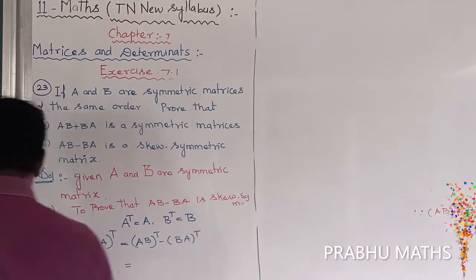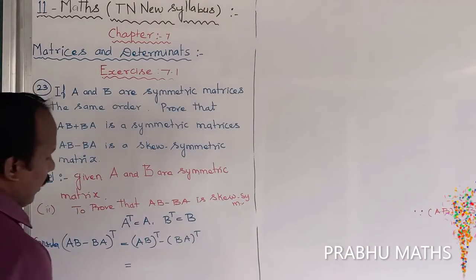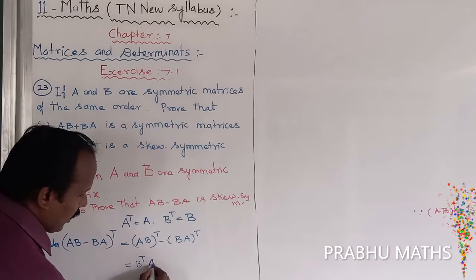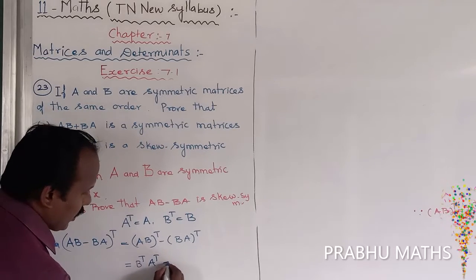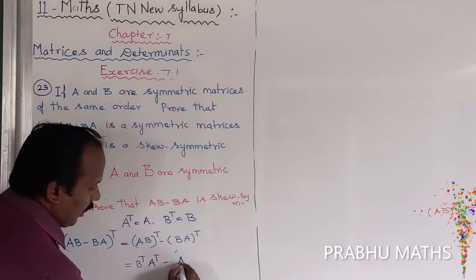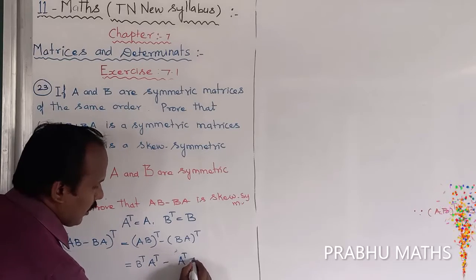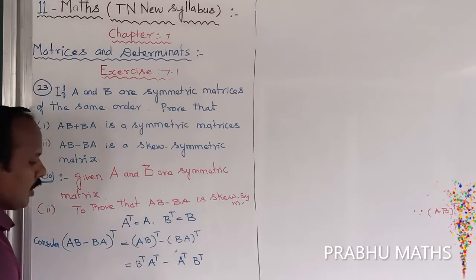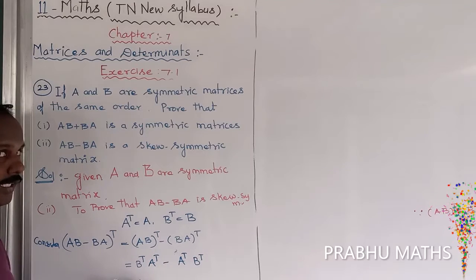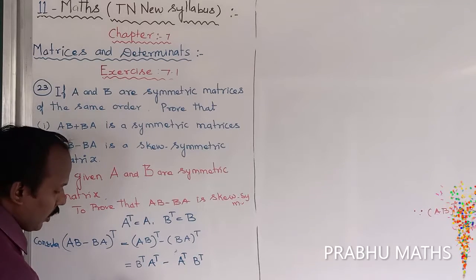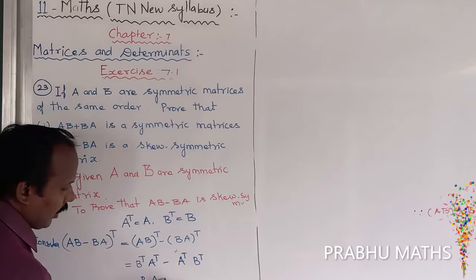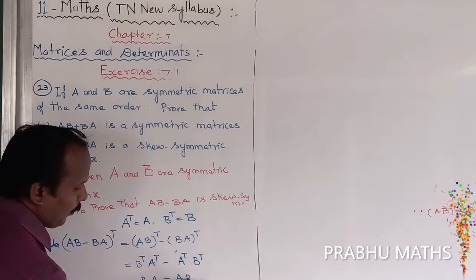Using the formula: B transpose A transpose minus A transpose B transpose. Since B transpose equals B and A transpose equals A, this simplifies to BA minus AB.